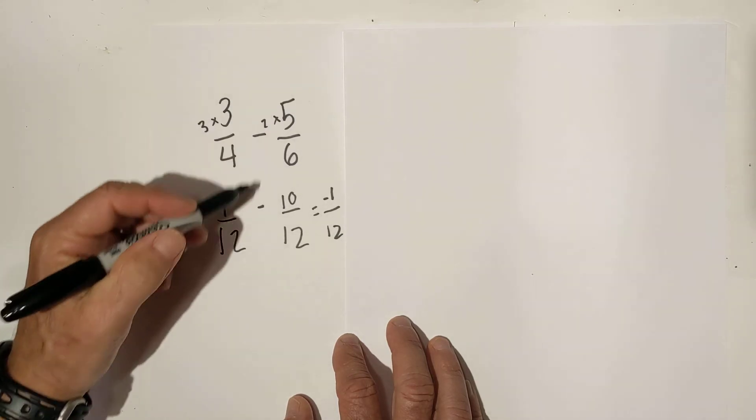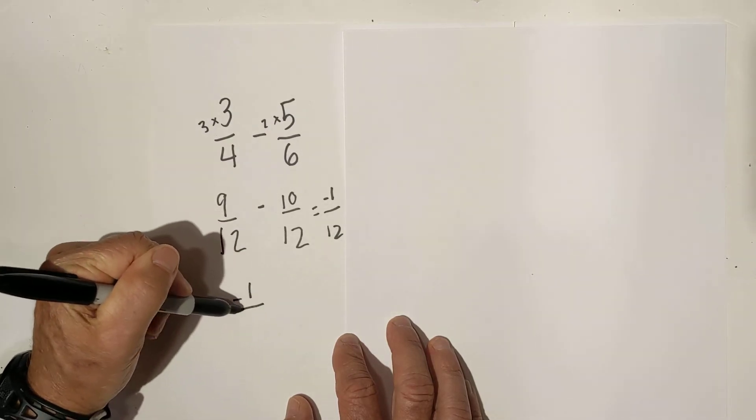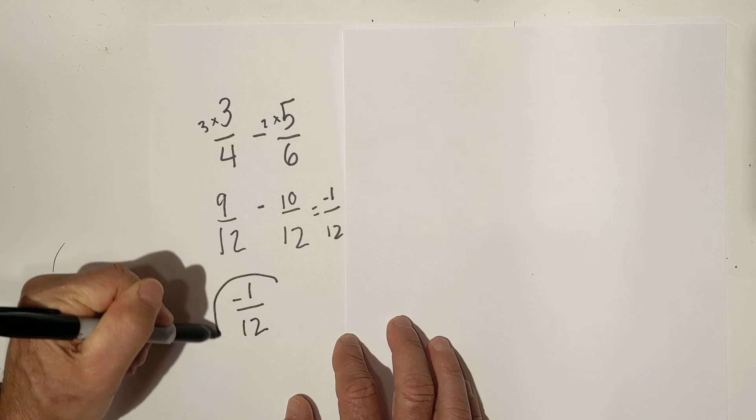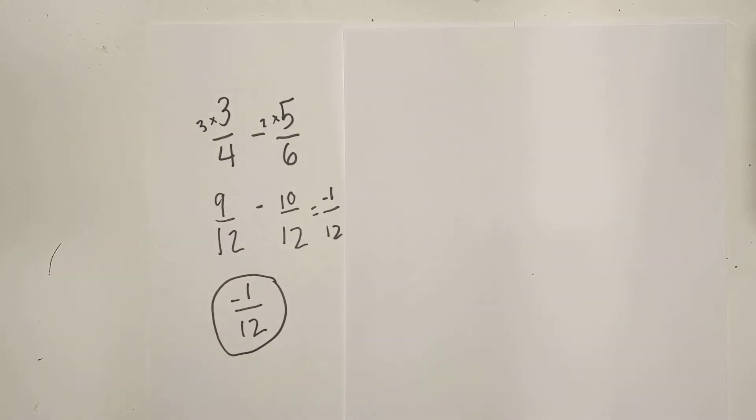So three-fourths minus five-sixths is negative one twelfth. Thanks for watching, and remember kindness multiplies kindness. Be kind to someone today.